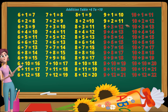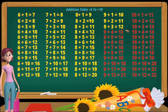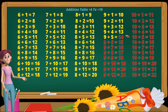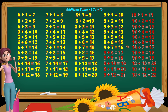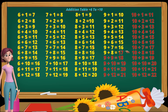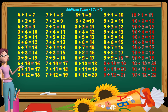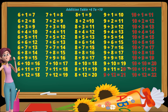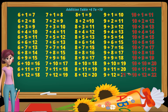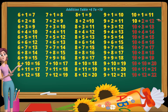Nine plus one equals ten. Nine plus two equals eleven. Nine plus three equals twelve. Nine plus four equals thirteen. Nine plus five equals fourteen. Nine plus six equals fifteen. Nine plus seven equals sixteen. Nine plus eight equals seventeen. Nine plus nine equals eighteen. Nine plus ten equals nineteen. Nine plus eleven equals twenty. Nine plus twelve equals twenty-one.